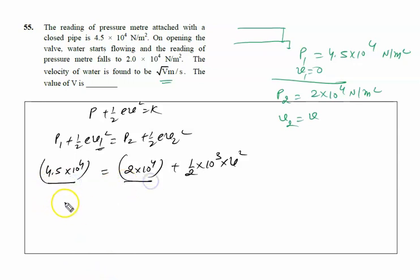Now this is 4.5 and this is 2, so we will write 2.5 × 10⁴ = ½ × 10³ × V².